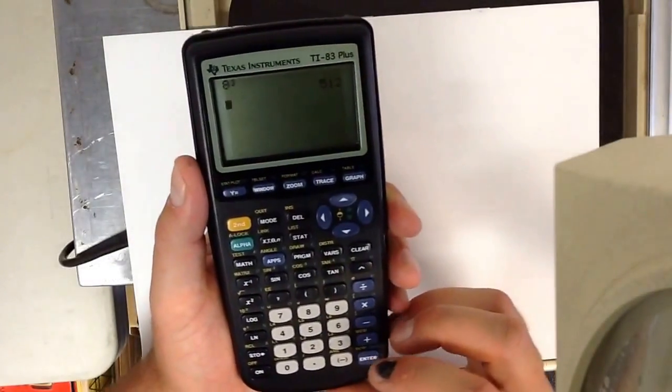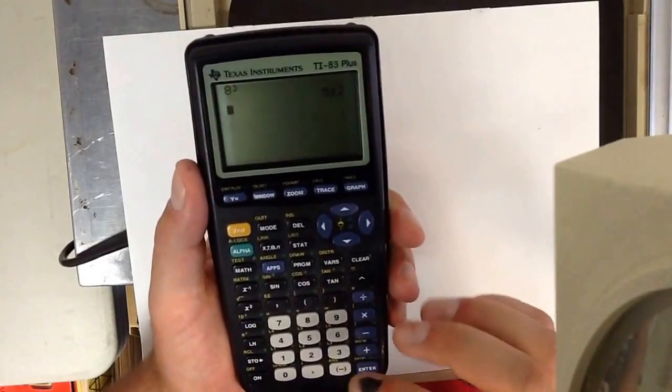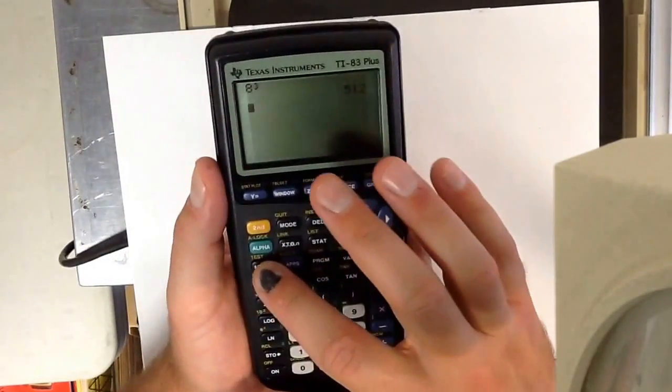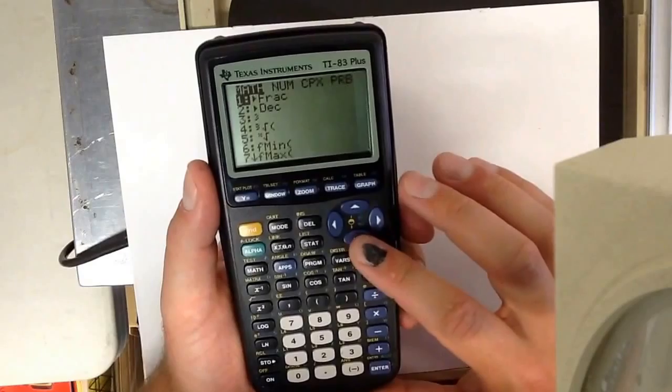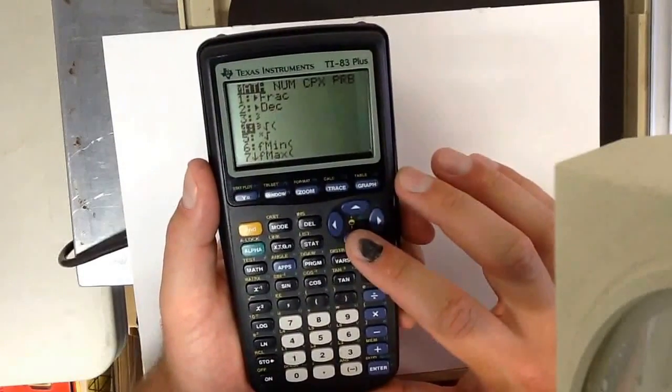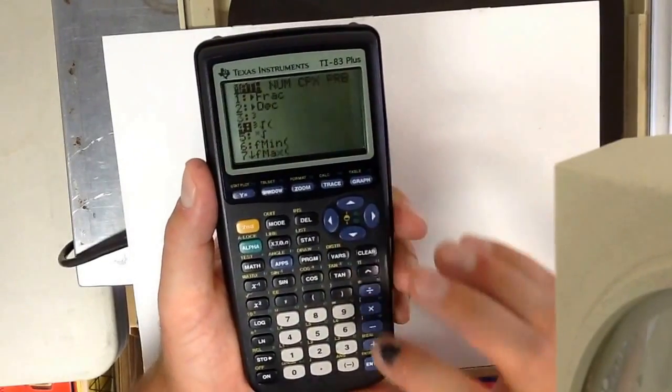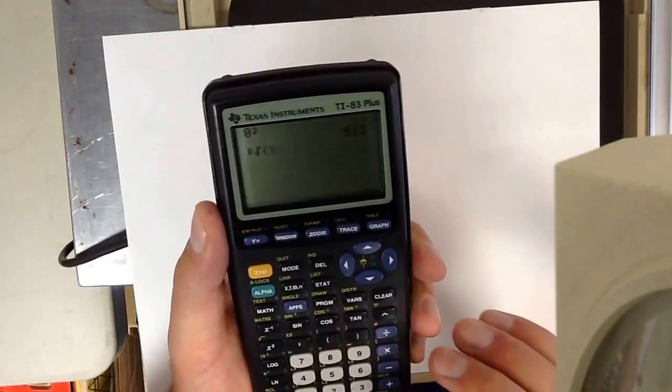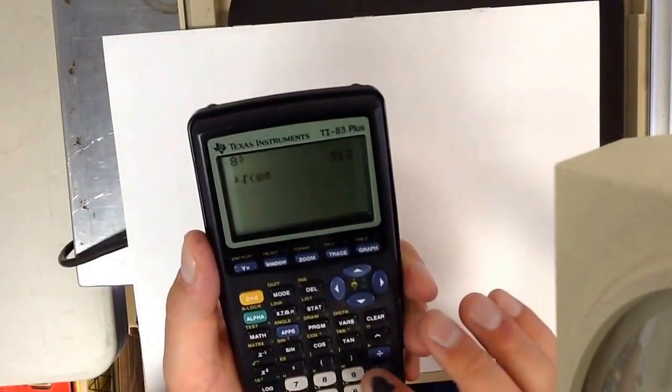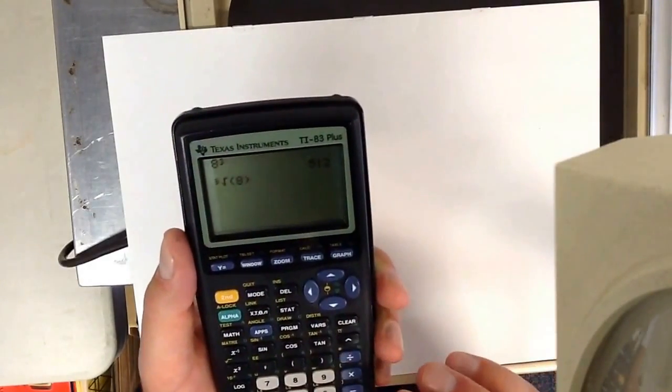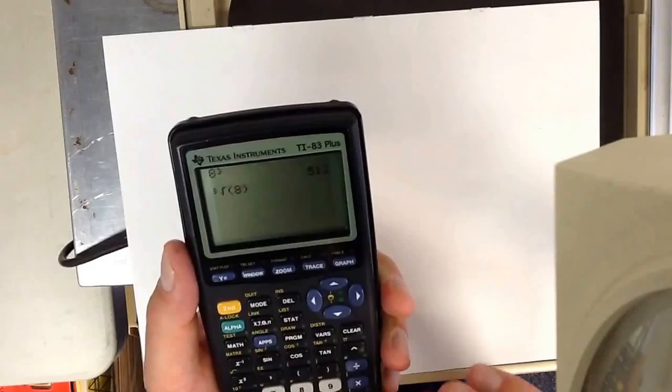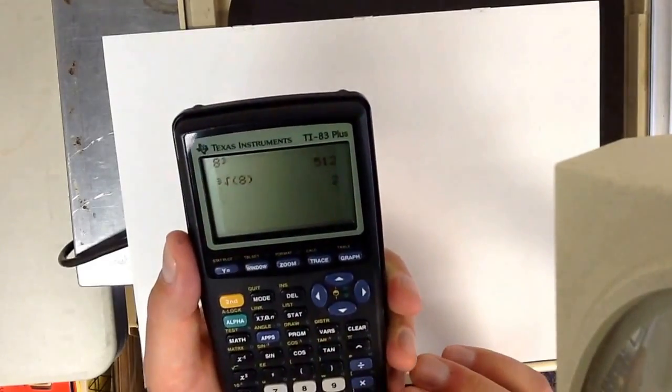Now let's say I wanted to cube root eight. Well I can do that. First I press math and I go down to four which is the cube root of. Now I'll put eight inside there and press enter. And I get what I should, two.